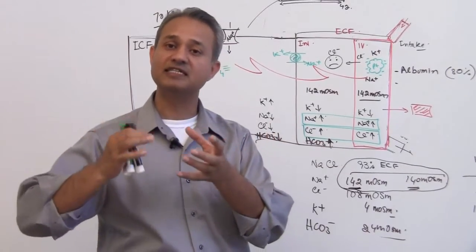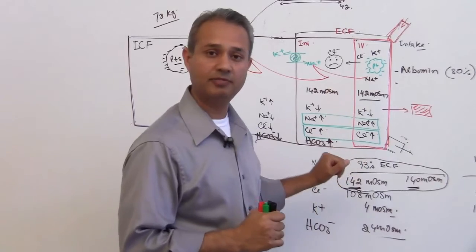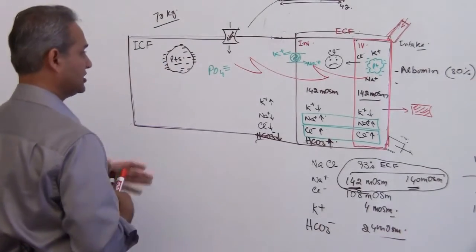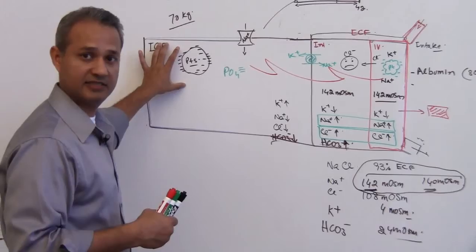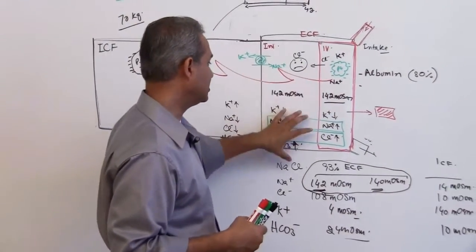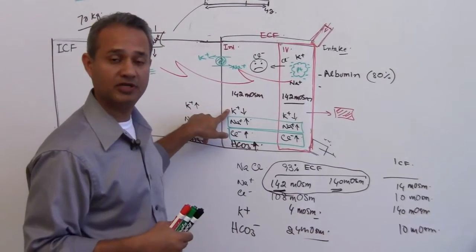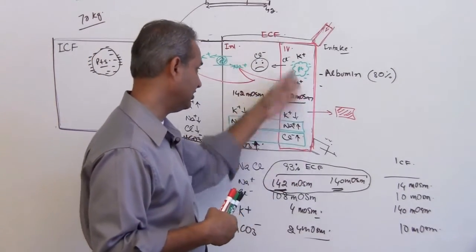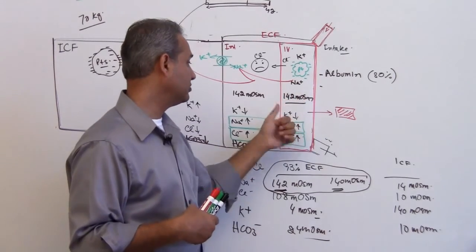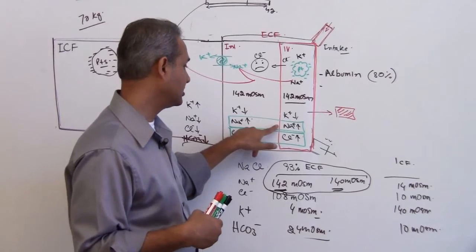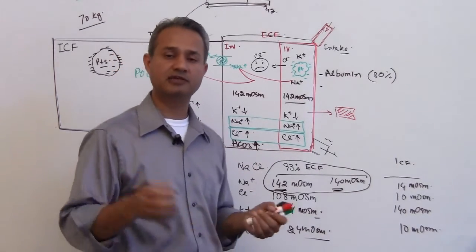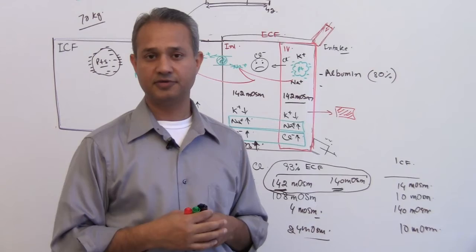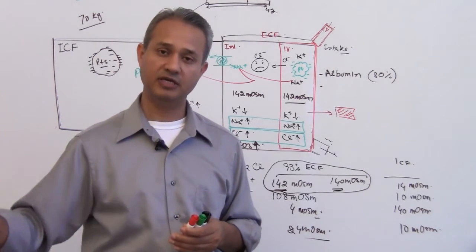The ICF is a secondary, dependent compartment. The ECF is the primary driving compartment, and within it the vascular system is the major driver. To summarize: phosphates, magnesium, potassium, and proteins are more inside the cell. Outside — in the interstitial fluid — there is very little protein, small amounts of potassium, and greater amounts of sodium, chloride, and bicarbonate. Inside blood vessels there are larger amounts of proteins, and same as interstitial fluid: lesser potassium, major amounts of sodium, chloride, and bicarbonate. If you remember just one thing: sodium chloride for the ECF, potassium for the ICF.